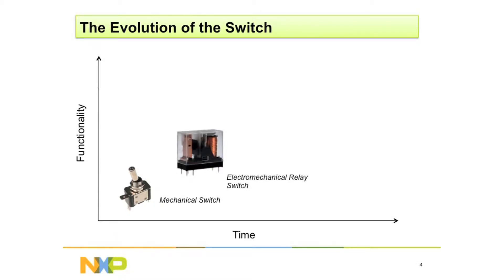That's really useful, but once machines started coming around and computer-controlled, you needed an electrical way to control those mechanical contacts. And hence, the electromechanical relay, where an electric current caused a magnetic field, which caused mechanical contacts to close. So it was an electrically controlled switch.